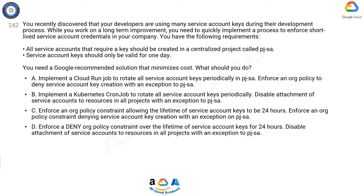A: Implement a Cloud Run job to rotate all service account keys periodically in PJSA. Enforce an org policy to deny service account key creation with an exception to PJSA. B: Implement a Kubernetes cron job to rotate all service account keys periodically. Disable attachment of service accounts to resources in all projects with an exception to PJSA.